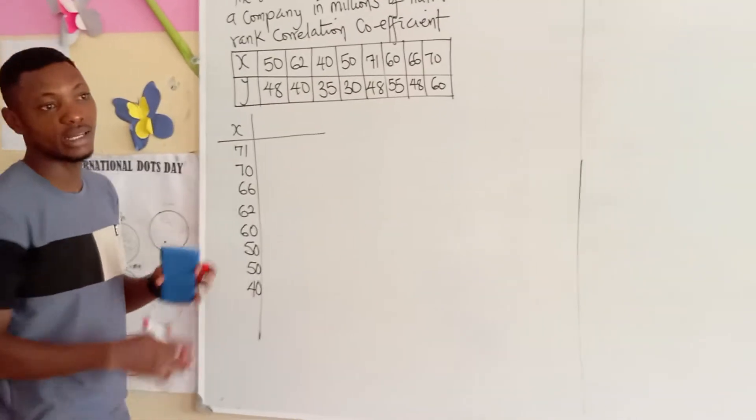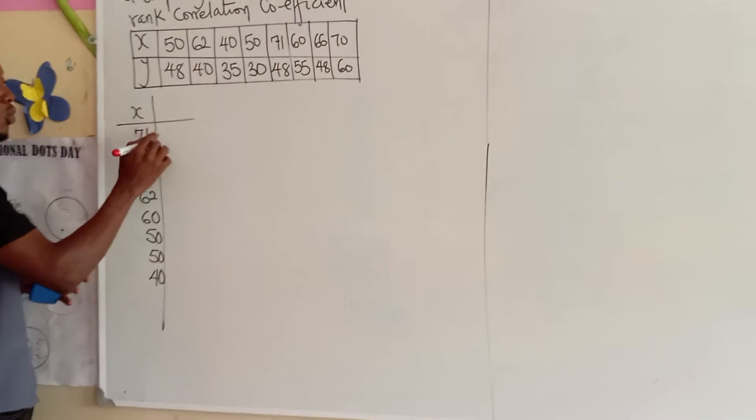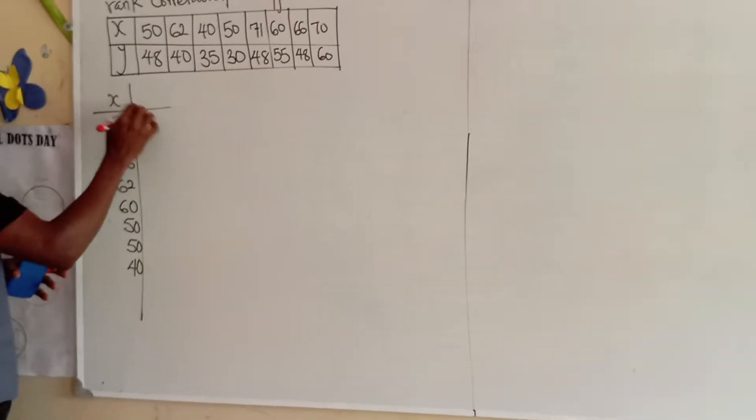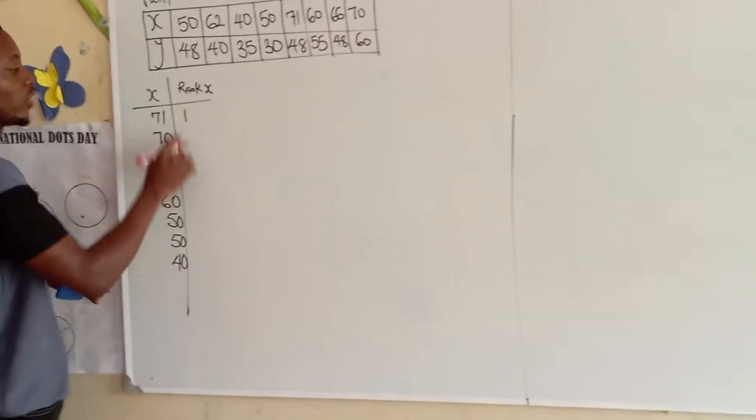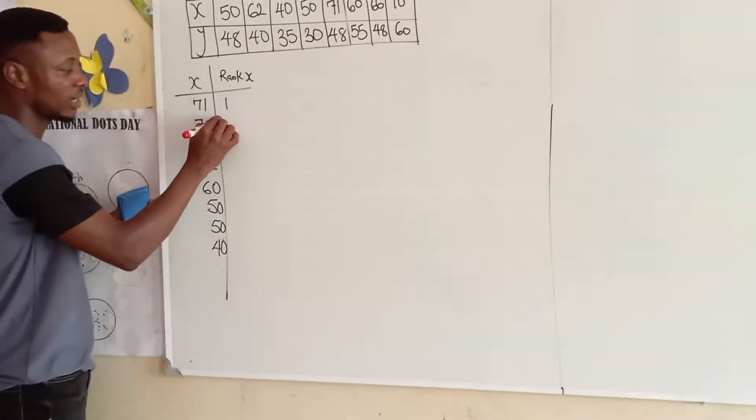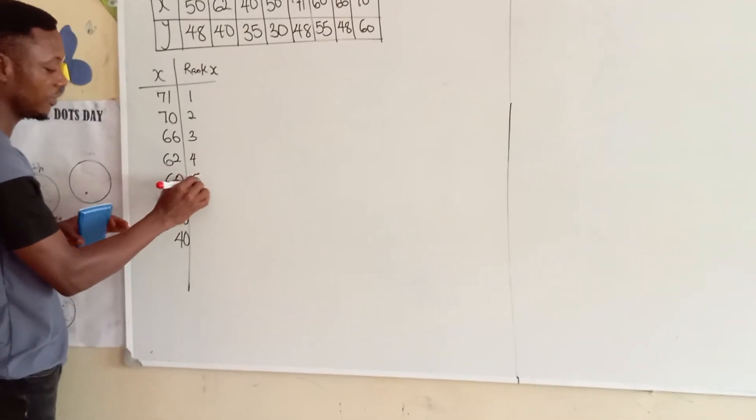Now, we are going to give it rank. In terms of position, now, we start from the highest, which is 71. It takes first position. Do we understand? And so, this is our rank. Rank X is first. Then, 70 is second. 66 is third. 62 is fourth. 60 is fifth.